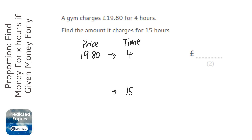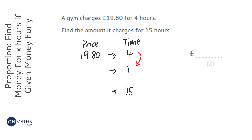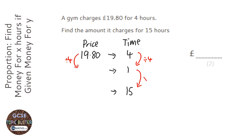The first thing I'm going to do is work out the hourly rate. To get that, I divide both sides by 4. And then I'm going to work out what 15 hours is by multiplying both sides by 15.